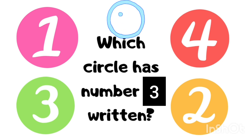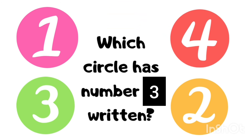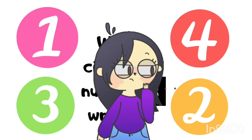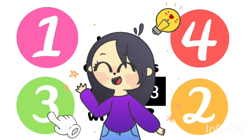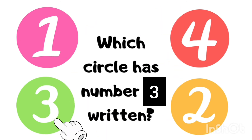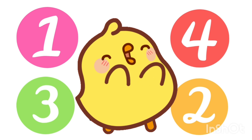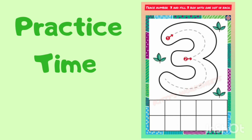Now touch the circle that has number three written on it, and also tell the color. Right answer — number three is in green color. Well done kids, pat your back! You have done a great work.